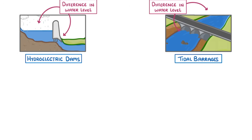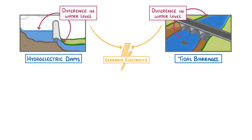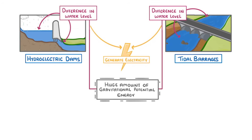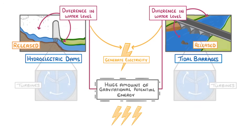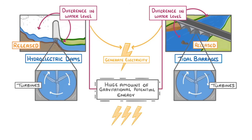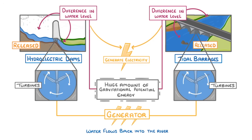In both of these cases, it's the difference in water levels that we're using to generate electricity. The difference in heights means that the stored water has a huge amount of gravitational potential energy, which we can convert into electricity. Basically, the force of the water being released from the reservoirs behind the dams spins the blades of the turbines inside the dams. These turbines are connected to generators that generate electricity as they spin. And finally, after passing through the turbines, the water flows back into the river on the other side of the dam.